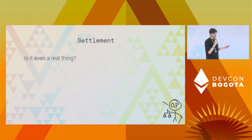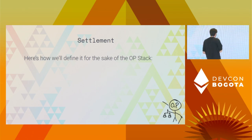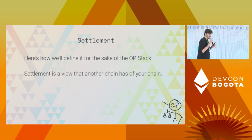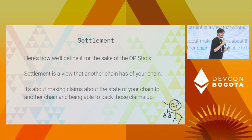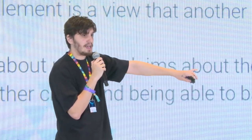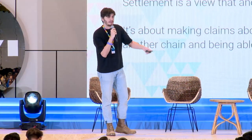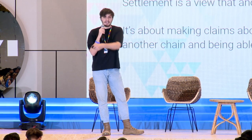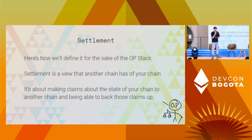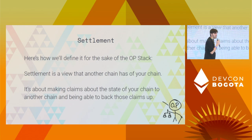On to the final part: settlement. Settlement is a view that another chain has of your chain. It's about making claims about the state of your chain to another chain and being able to back those claims up. This means you can settle to multiple chains at the same time — nothing in this definition says you can't settle to Ethereum and Bitcoin simultaneously, or have multiple settlement mechanisms to the same chain. Essentially, it's just about making claims and backing them up.